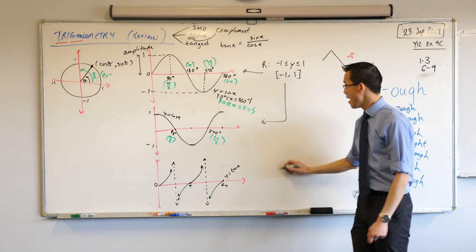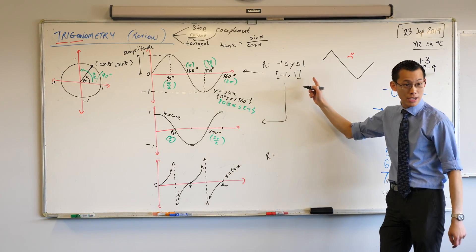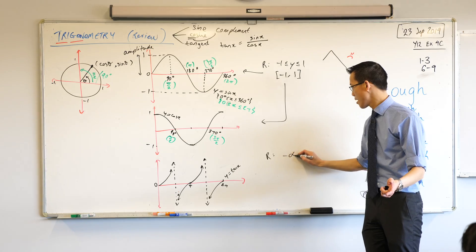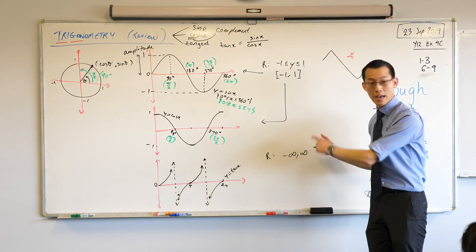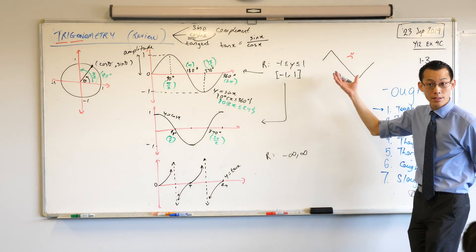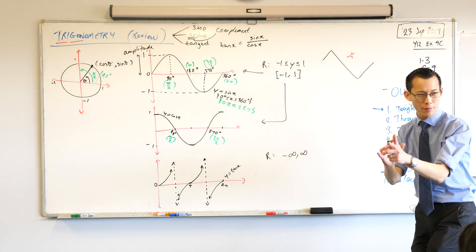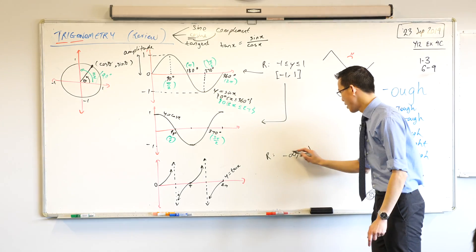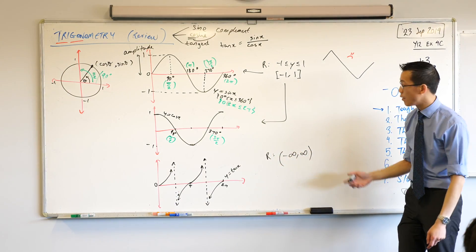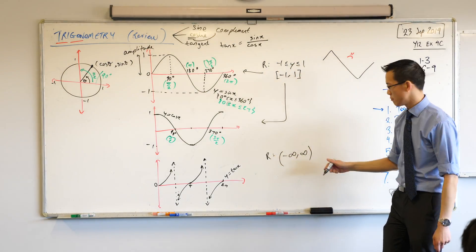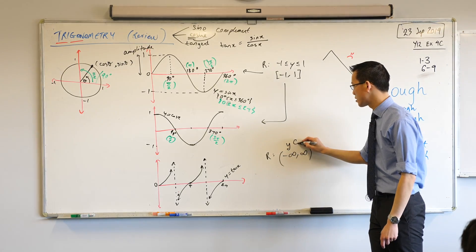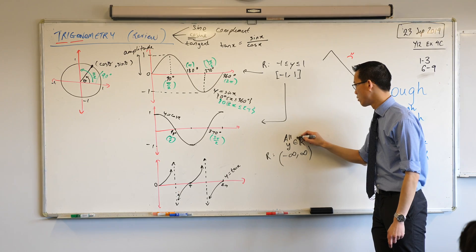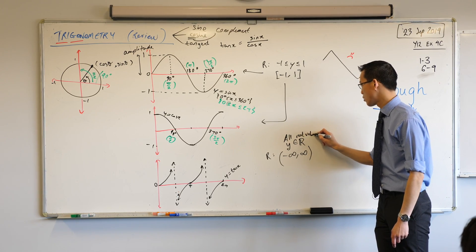But here, our range, if we wrote this in interval notation, it's going to be negative infinity and all the way to positive infinity. What do I have on the outside? Do I have square brackets? I'm going to have curly brackets. Why curvy brackets? Yeah, you can't ever get there as a final thing. That's in interval notation. How would I write that using set notation? All real values of y, you could write it like that.